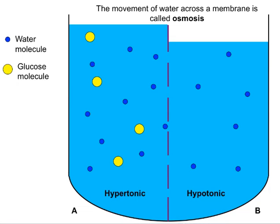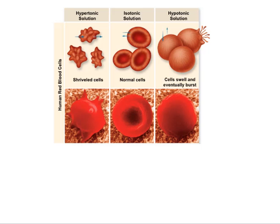Water will continue to move from the hypotonic into the hypertonic solution until either both solutions have similar concentrations and become isotonic, or something else stops the water from moving — such as the pressure of side A becoming higher than side B. The weight of the extra water on side A creates pressure pushing down, which eventually prevents more water from moving from the hypotonic solution. If nothing limits it, water will keep going in until, for example, the cells burst — as we see in red blood cells.